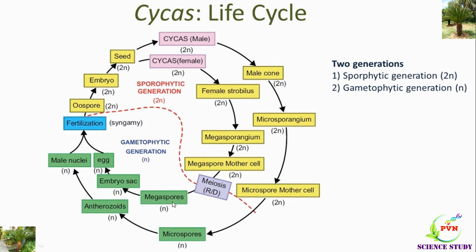Both megaspore mother cell and microspore mother cell undergo meiosis and are converted into megaspore as well as the microspore. Both are haploid and are the first cells of the gametophytic generation. The microspore is later developed into antherozoid, and the megaspore is developed into embryo sac and egg. The egg is the female gamete and the male nuclei is the male gamete; both are haploid in nature.